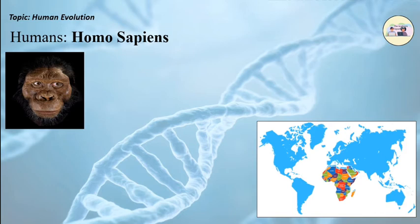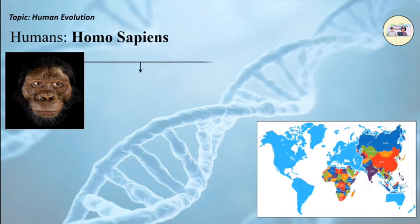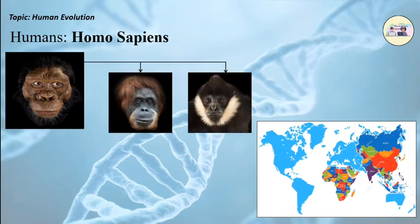Thus, ape-like animals evolved. Meanwhile, these ape-like animals reached the south and northeast Asia and finally evolved into gibbon and orangutan.